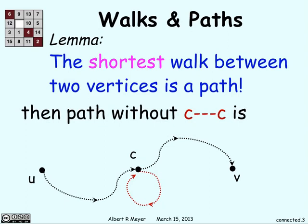The path without that section that goes from c back to itself also goes from u to v, and it's shorter. If we have any path that crosses over itself, we can just get rid of that part that loops around back into itself, and we still have a walk from u to v. Therefore, the shortest walk from u to v is going to be a path.